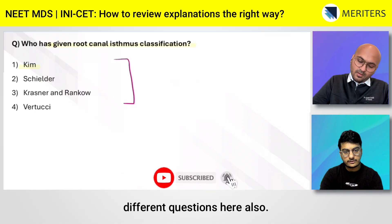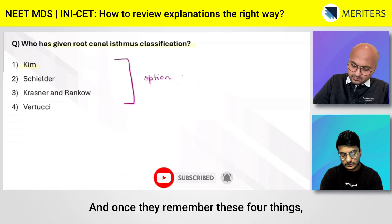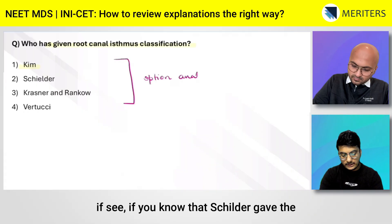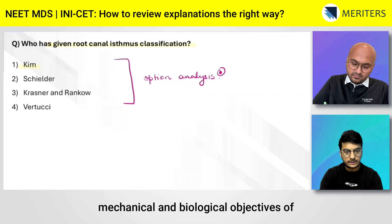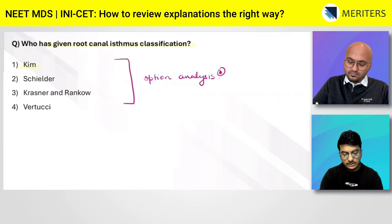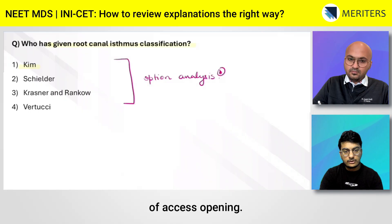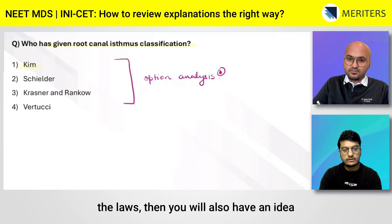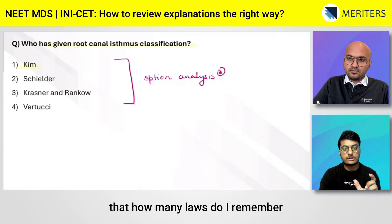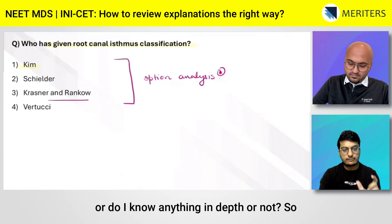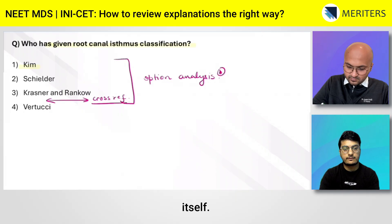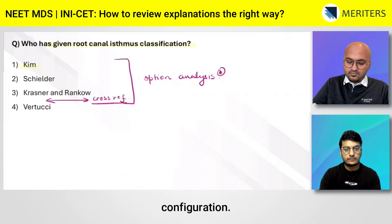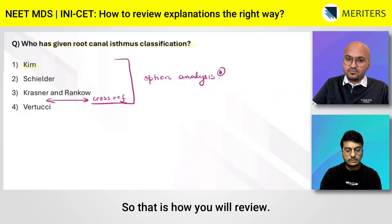By analyzing all options, they will be memorizing four different concepts from one question. If you know that Schilder gave the warm vertical compaction technique and the mechanical and biological objectives of biomechanical preparation, and that Krasner and Ranka gave the laws of access opening, you can assess whether you know those laws in depth. If not, you can go back and read the laws of access opening from this question itself.